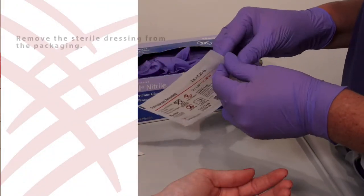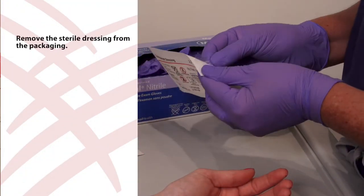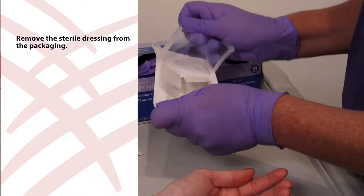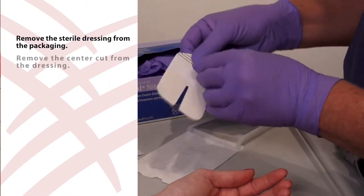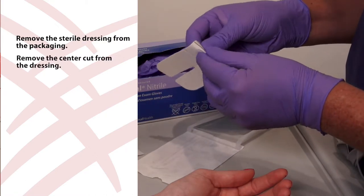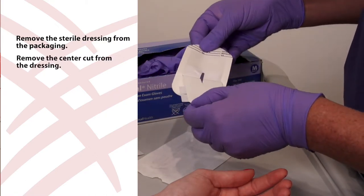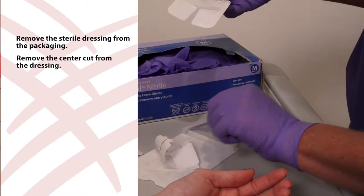Peel open the packaging and remove the sterilized dressing. Remove the center cut from the dressing. Peel the paper liner from the dressing, exposing the adhesive surface.